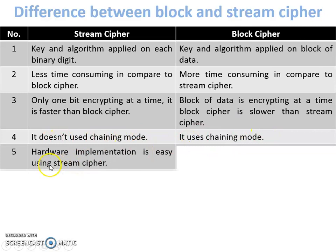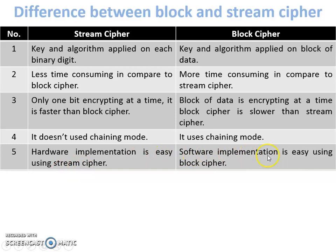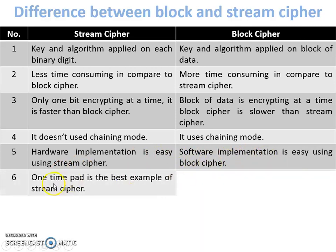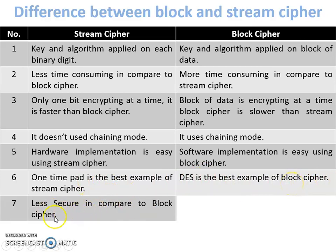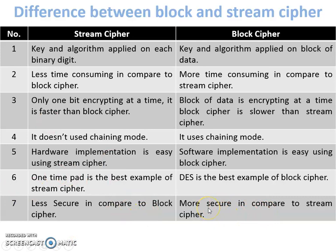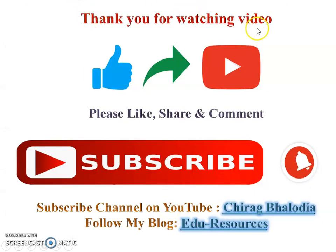Hardware implementation is easy using stream cipher, while software implementation is easy using block cipher. The one-time pad is the best example of stream cipher — all one-time pads are stream ciphers, but not all stream ciphers are one-time pads. DES is the best example of block cipher. Stream cipher is less secure compared to block cipher because it does not use chaining mode and uses bit by bit encryption, so someone can more easily decrypt individual bits.